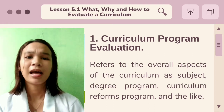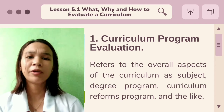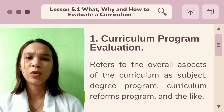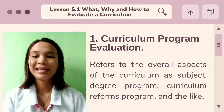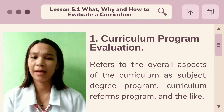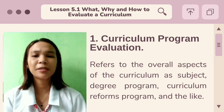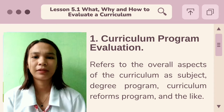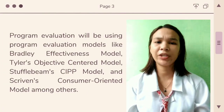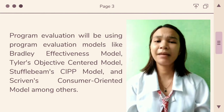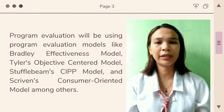Curriculum program evaluation refers to the overall aspects of curriculum as subject, degree program, curriculum reforms program, and the like. It looks at the parameters, needs, components, and outcomes of program design with an eye towards improving student learning. Some examples are: curriculum development as a subject, bachelor of education as a degree, K-12 as a curricular reform, outcomes-based education as a process, and mother tongue-based multilingual education as a program. Program evaluation uses models like Bradley Effectiveness Model, Tyler's Objective-Centered Model, Stufflebeam's CIPP Model, and Scriven's Consumer-Oriented Model, among others.